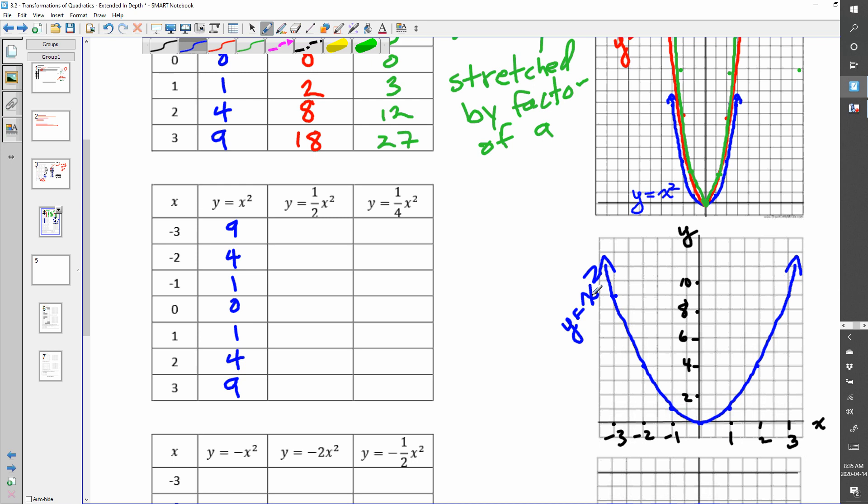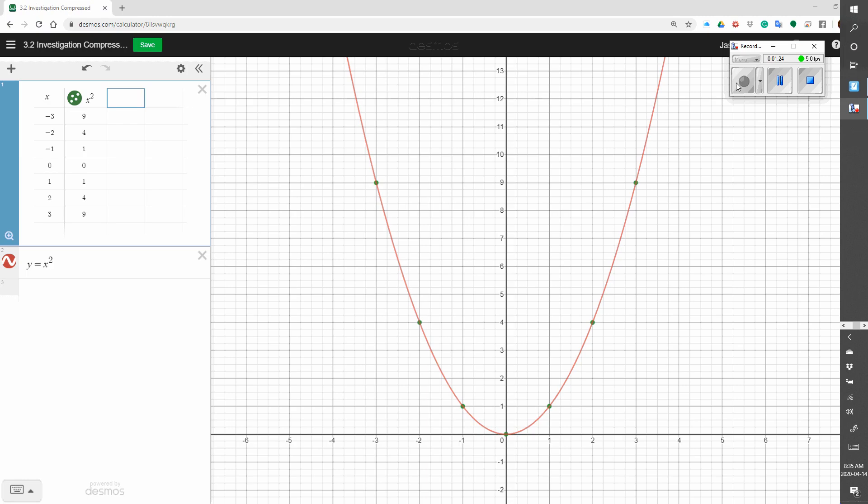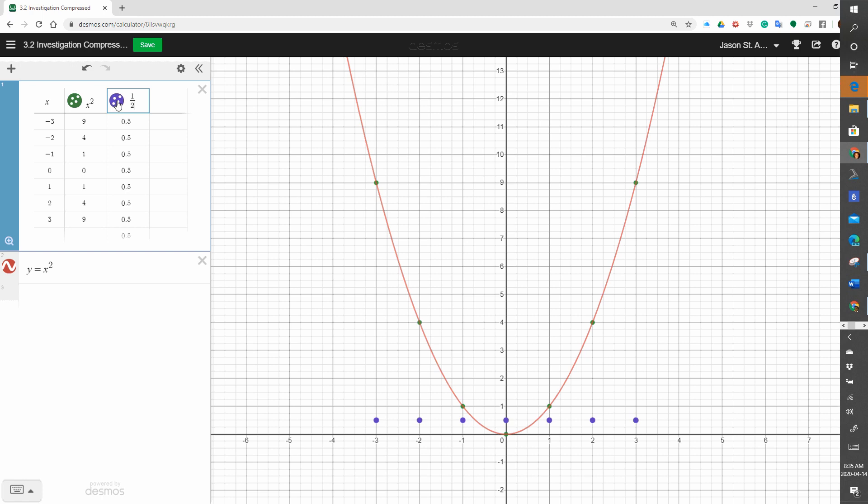Now let's go and use Desmos to figure out the points for 1 half x squared. To get 1 half x squared, we're going to type in to the right of x squared in the next column. We're going to write 1 and then use the slash 2. The slash is usually underneath the question mark sign on your keyboard. You can also use it from the Desmos settings. You should be able to get that as well. And you go 1 half and we're going to type in x squared. And here are the points that we get.